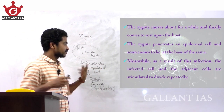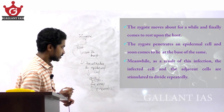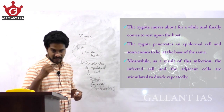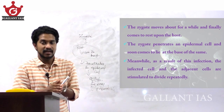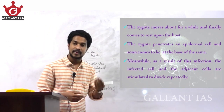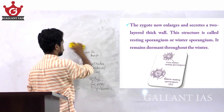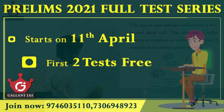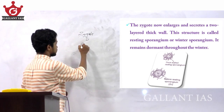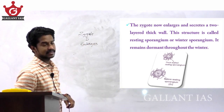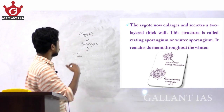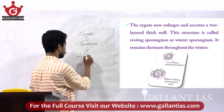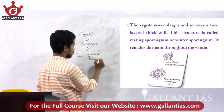Meanwhile, as a result of this infection, the infected cell and adjacent cells are stimulated to divide repeatedly. As the zygote penetrates into the epidermal cells, the infected host cells and adjacent cells undergo repeated division. The zygote now enlarges within the host cell and secretes a two-layered thick wall.